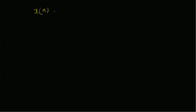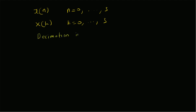Given a sequence x[n] that has four values where n is from 0 to 3, we want to find the four-point DFT — that is, we want to find X[k] where k is from 0 to 3. For this purpose, we are going to use the DIT FFT algorithm, that is, the decimation in time fast Fourier transform.